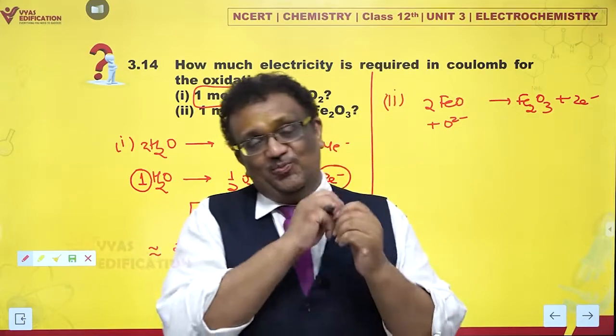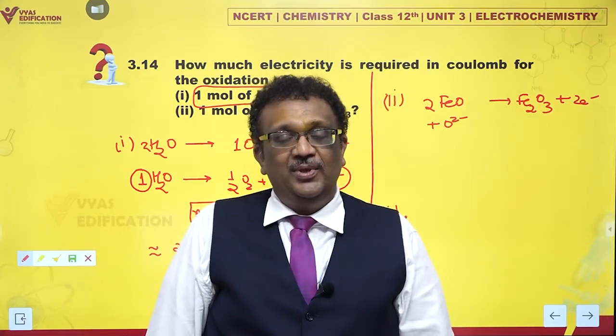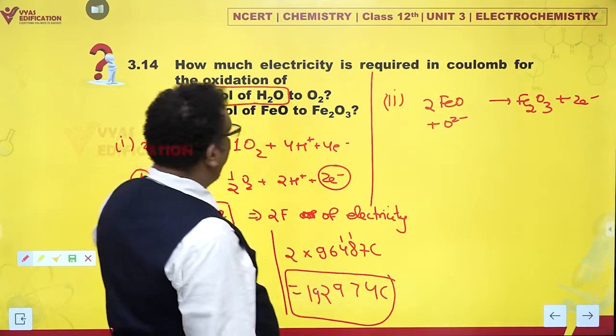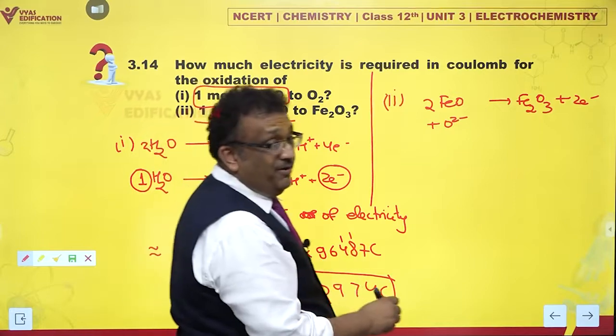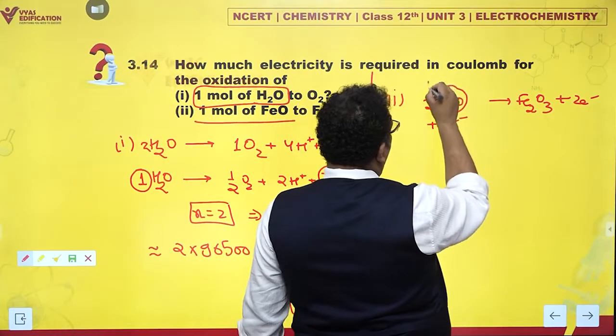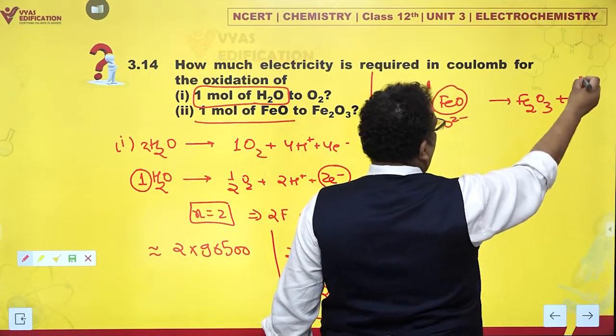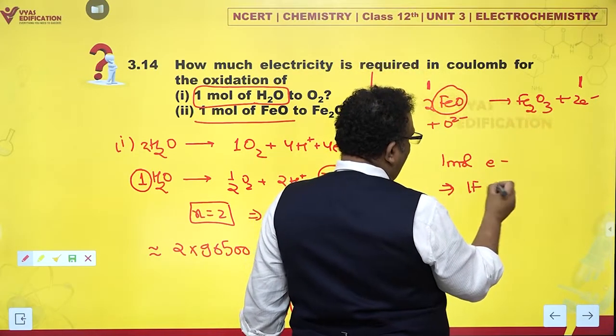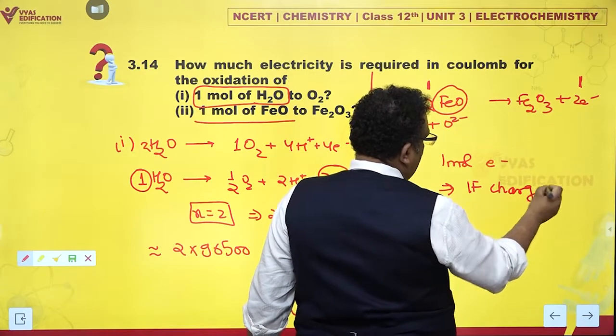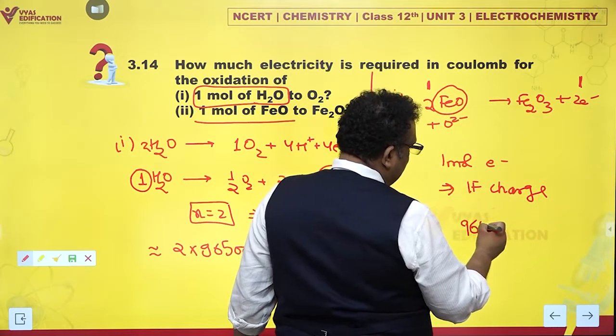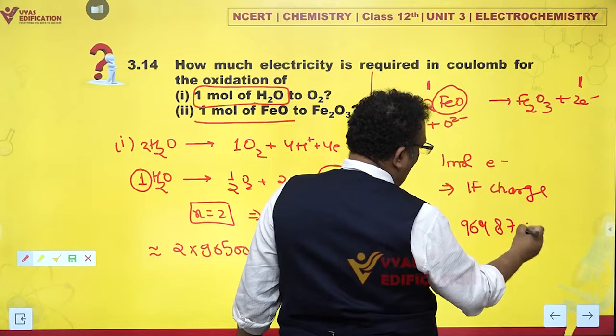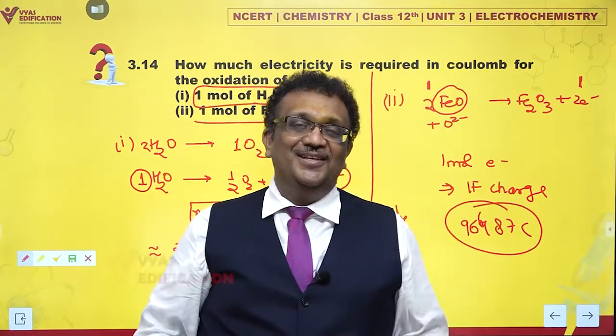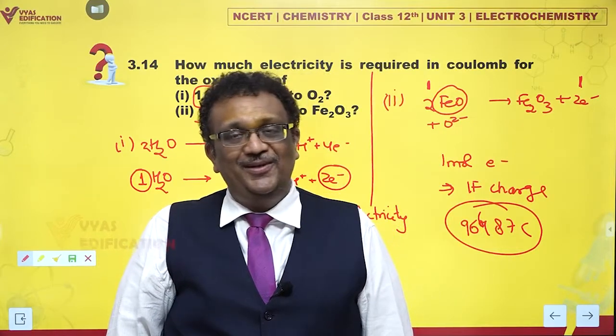Okay fine, what is the value of n now? I have one mole of FeO. If I'm considering FeO, if I take one mole of FeO, I take one mole of electrons. So one mole of electrons, that means one Faraday charge. That means 96487 coulombs of charge is required. That is the answer for the second part. Simple, beautiful.